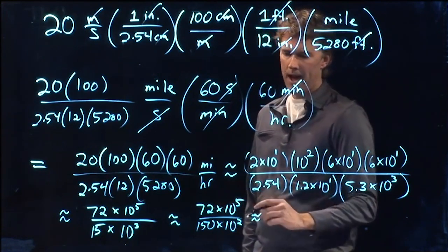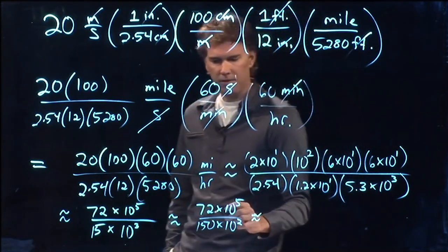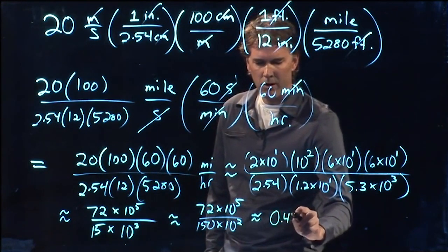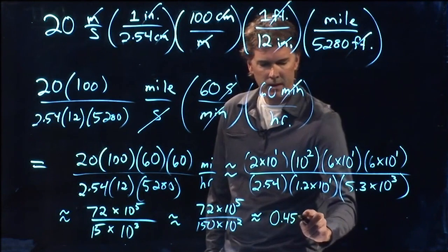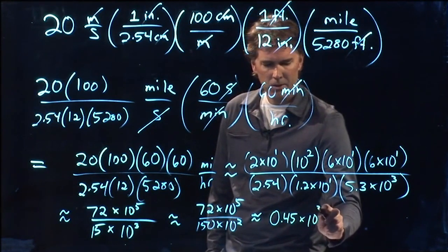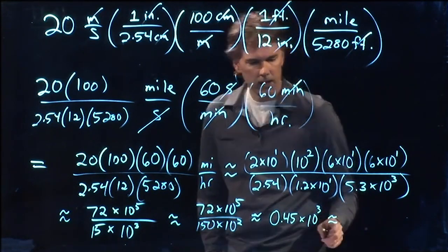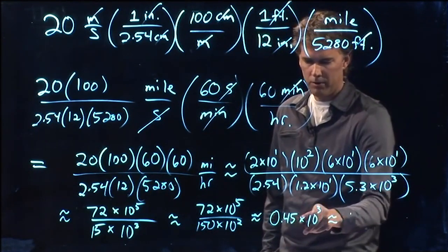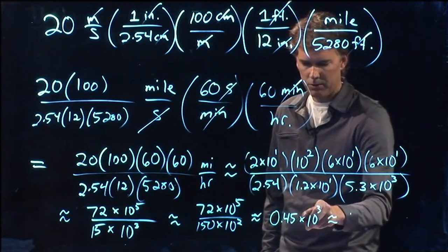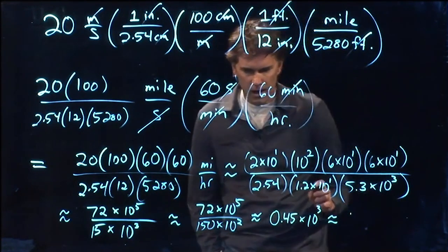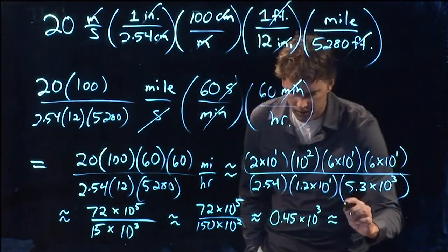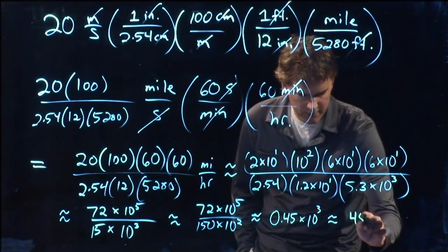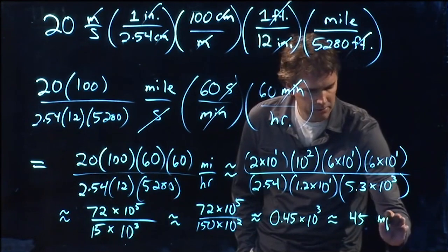And that is approximately what? Well, that's a little bit less than a half, right? So let's say it is around 0.45. And then we have 10 to the 3. And that is 4. We move it over 3 spots. So we get 1, 2, 3. And we should end up with around 45 miles per hour.